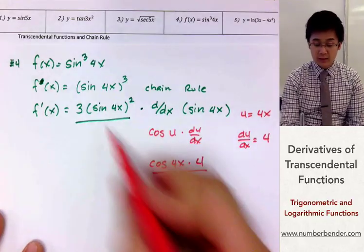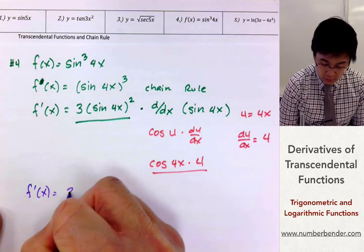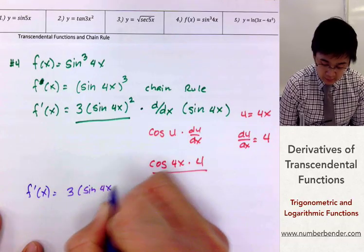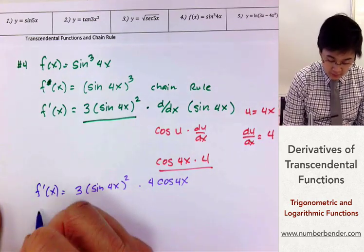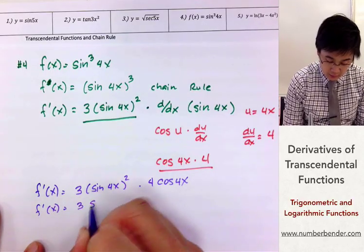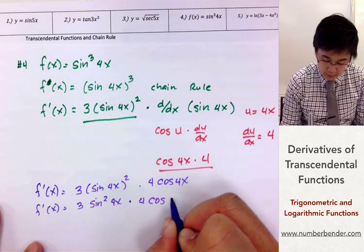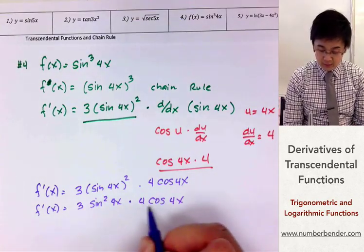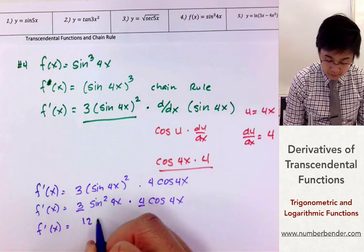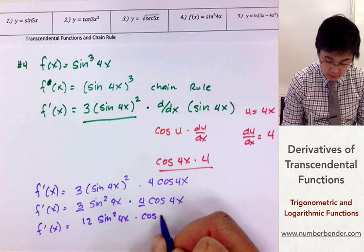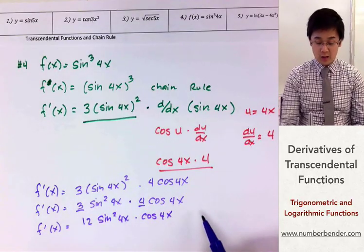So f prime of x is 3 times the quantity sine 4x squared, times 4 cosine 4x. We can rewrite this as 3 sine squared 4x times 4 cosine 4x, and since the constants can be multiplied, f prime of x simplifies to 12 sine squared 4x times cosine 4x. All of these versions are equivalent.